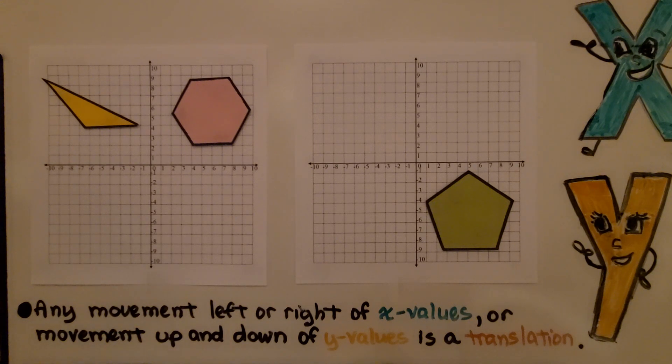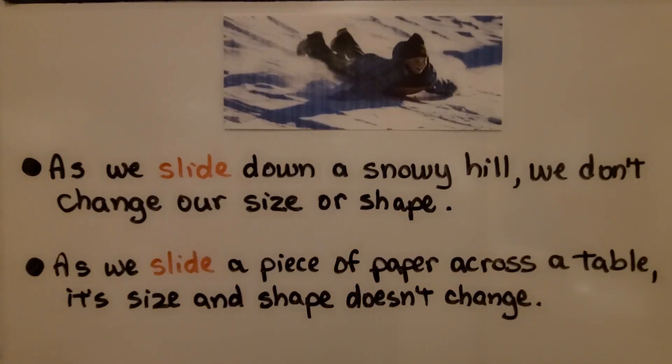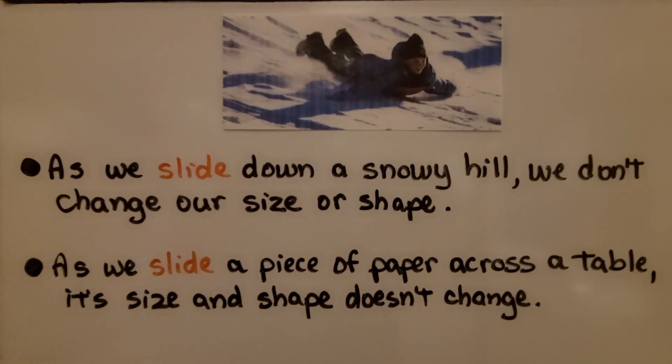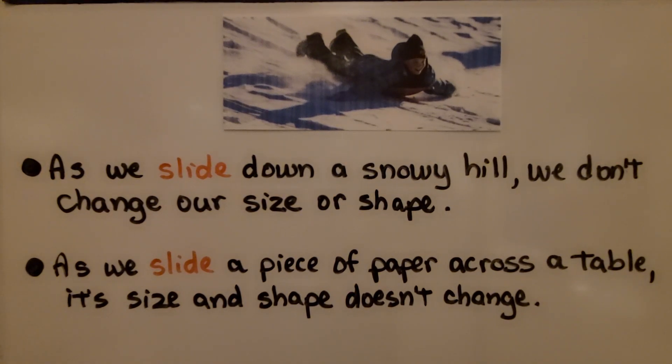Any movement left or right of x values or movement up and down of y values is a translation. As we slide down a snowy hill, we don't change our size and shape. As we slide a piece of paper across the table, its size and shape doesn't change—its location changes, though.